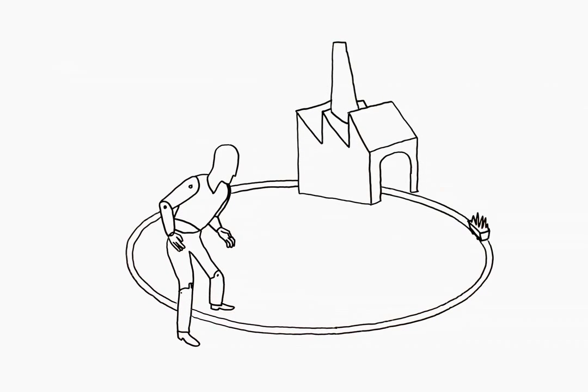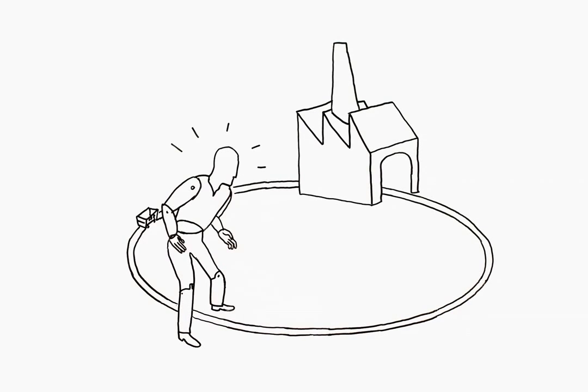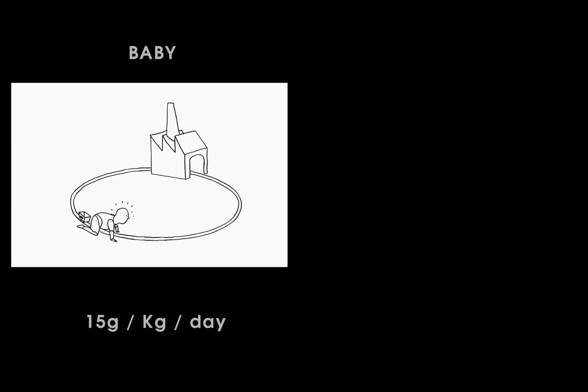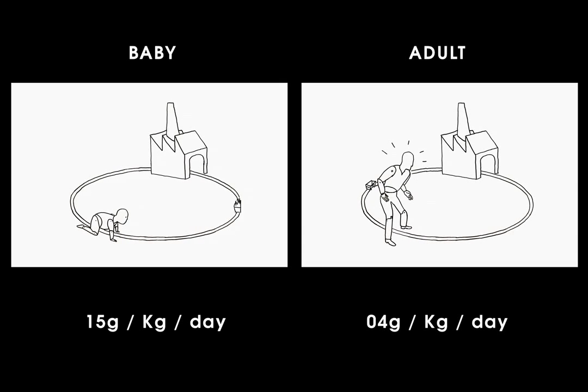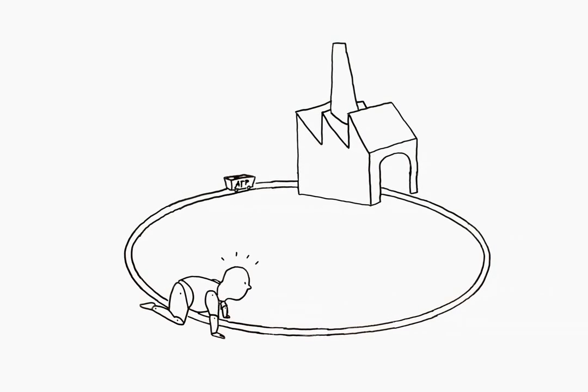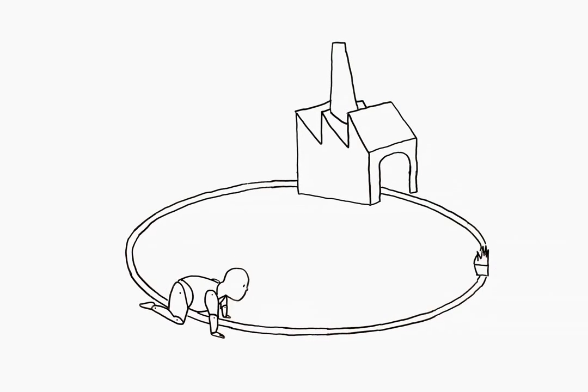This metabolism evolves during life. Indeed, the rate of protein turnover varies according to age or medical conditions. 15 grams per kilogram of protein are synthesized every day for a newborn baby, whereas only 4 grams per kilogram are synthesized every day for an adult. This can be easily understood since children need to develop new tissues for growing, whereas adults only need to maintain them.